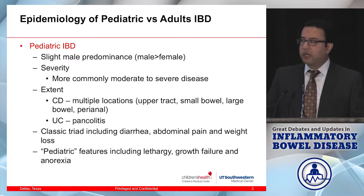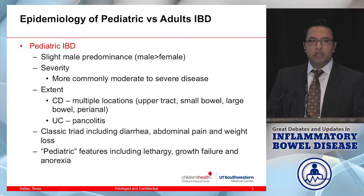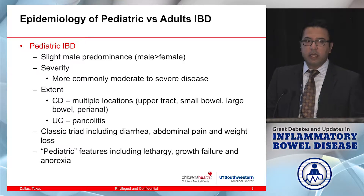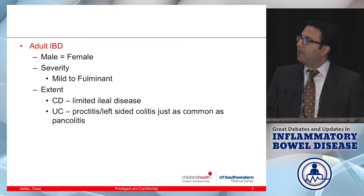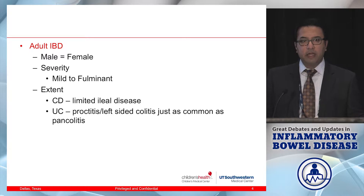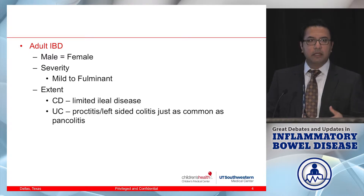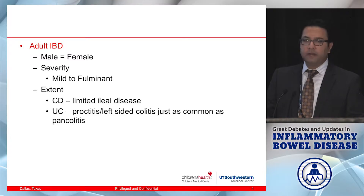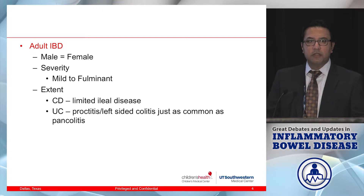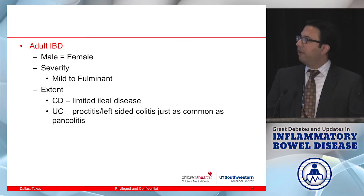It does have the classic triad of diarrhea, abdominal pain, and weight loss, but the additional feature important to us as pediatric gastroenterologists is weight and, in particular, height. Lethargy, growth failure, and anorexia are other issues we commonly see with our pediatric patients. The epidemiology of adult IBD shows a more equal distribution between males and females, and the severity can vary. Many adult colleagues talk about mild disease that is localized rather than extensive. In Crohn's disease you see patients with that classic limited ileal disease, and in ulcerative colitis you may see proctitis or just left-sided disease as commonly as pancolitis.